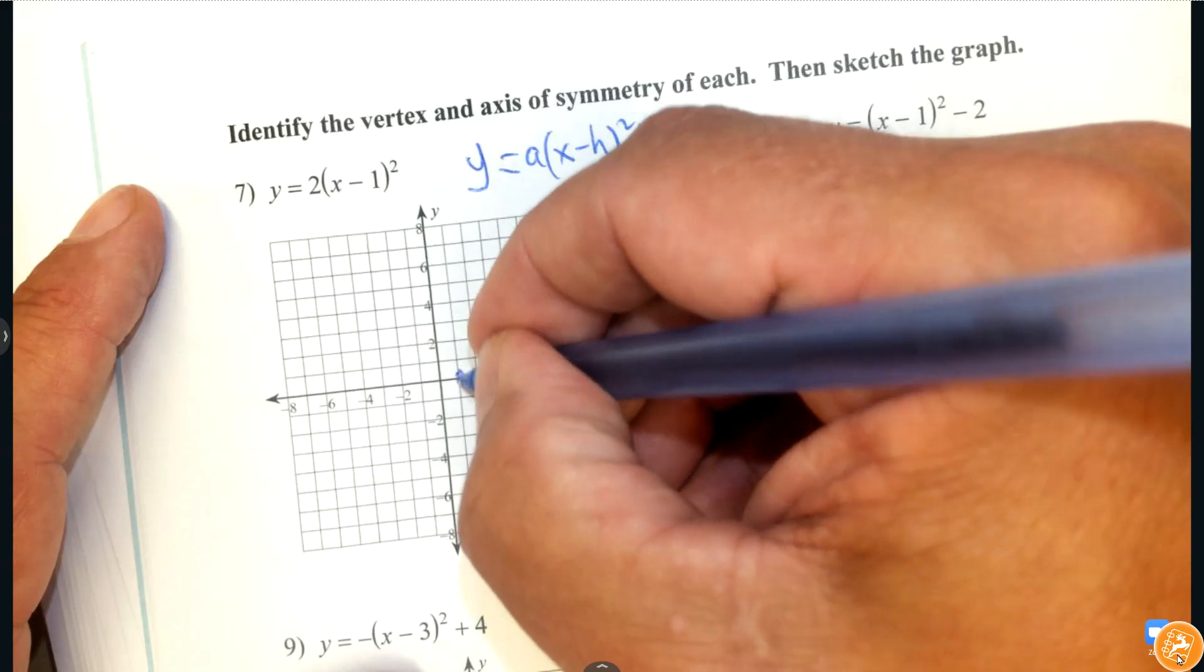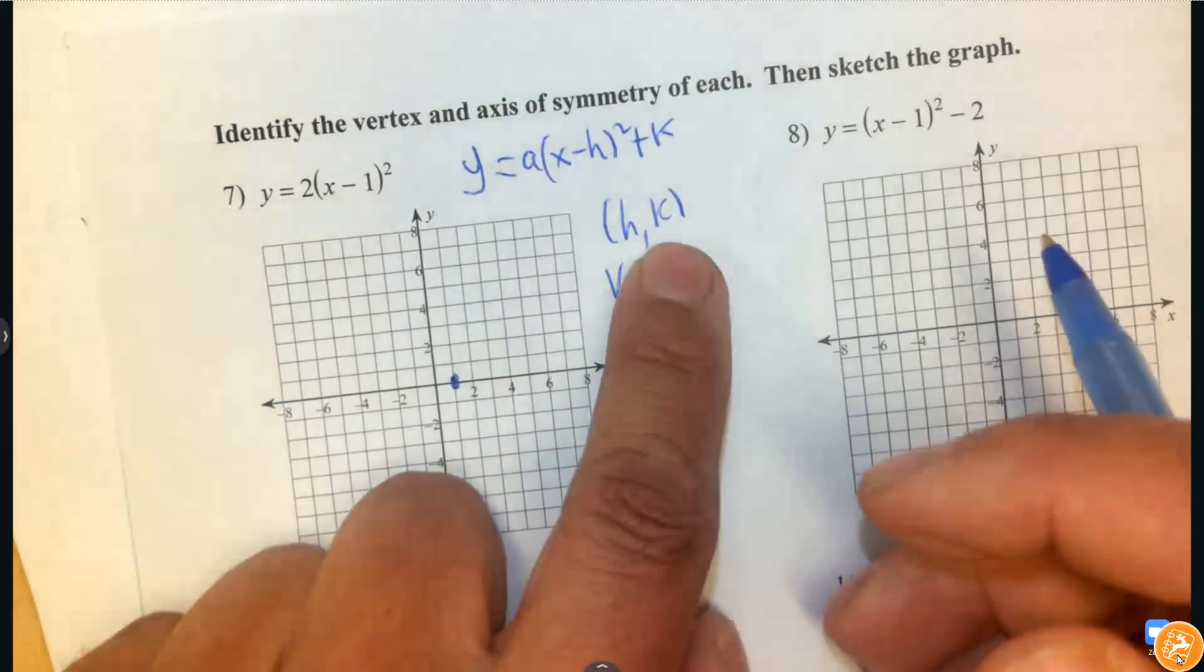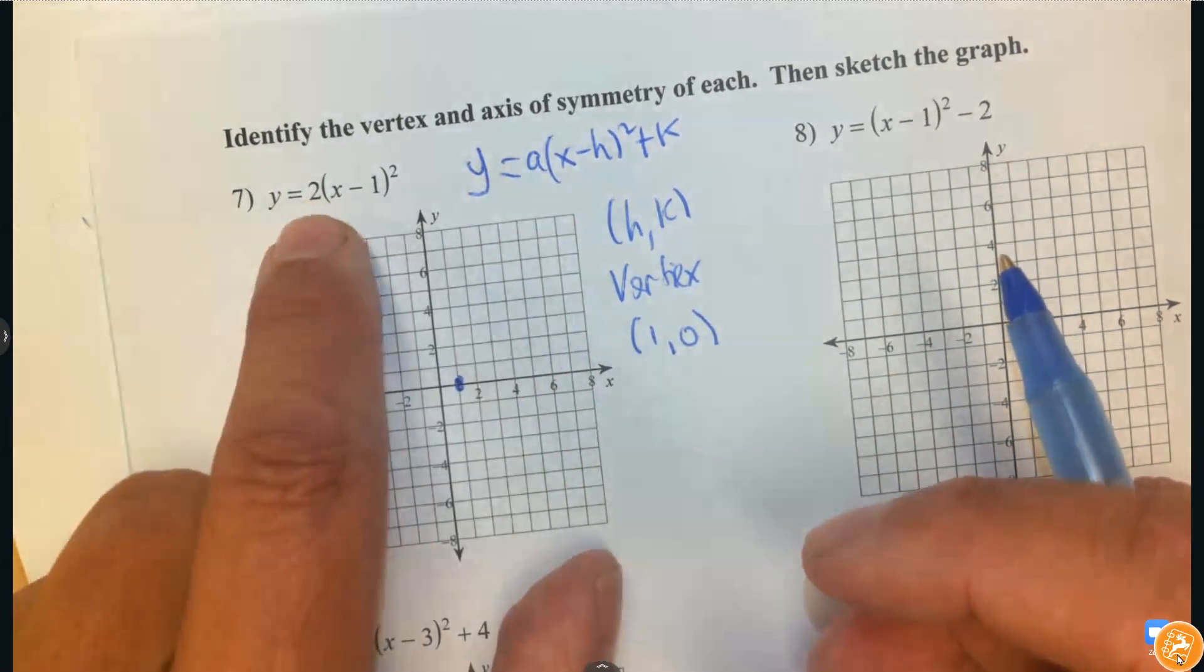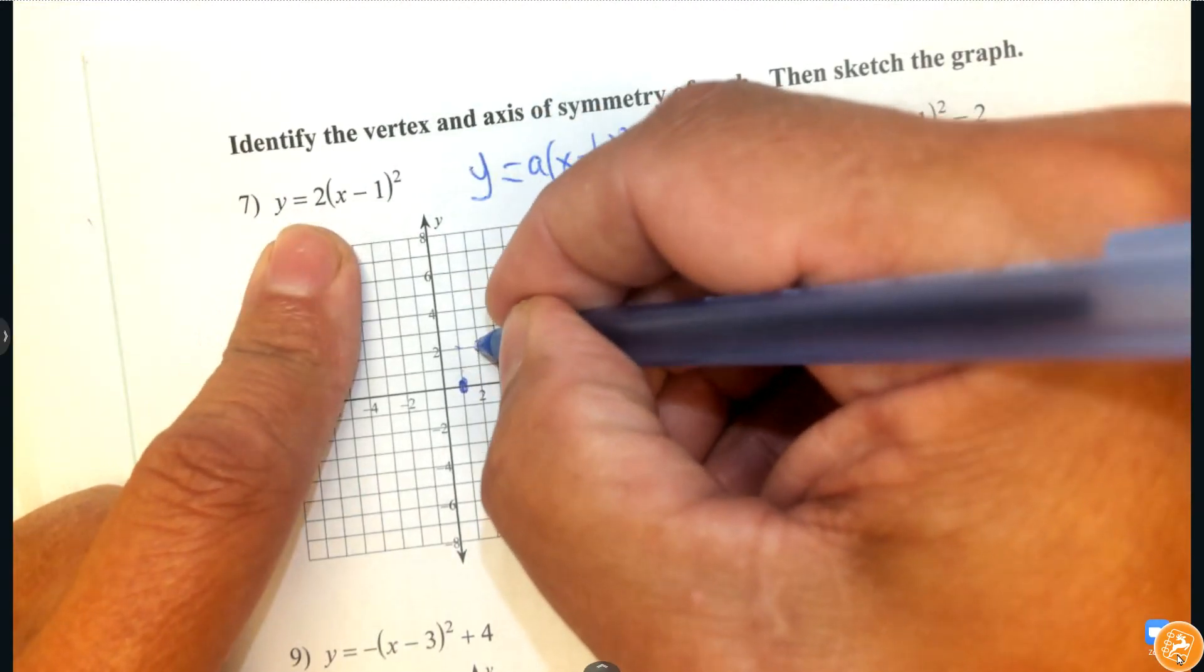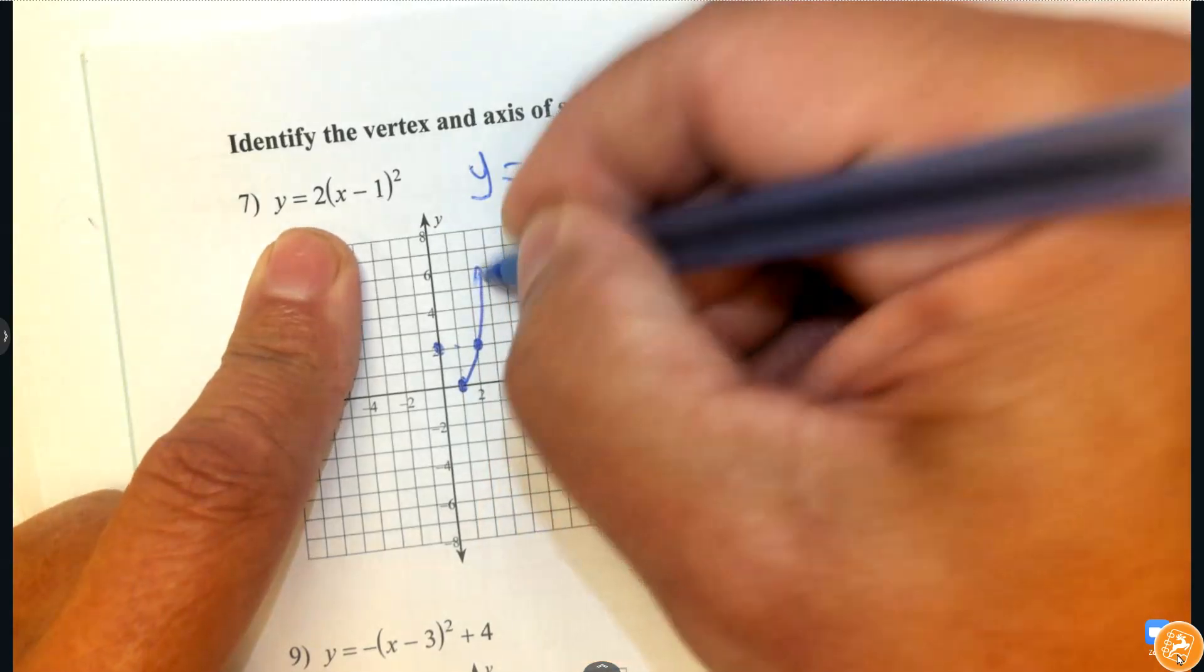So I'm going to go 1 to the right and 0. A gives me that vertical stretch. So positive 2 means from here, I'm going to go up 2 and to the right one and to the left one and then draw my parabola.